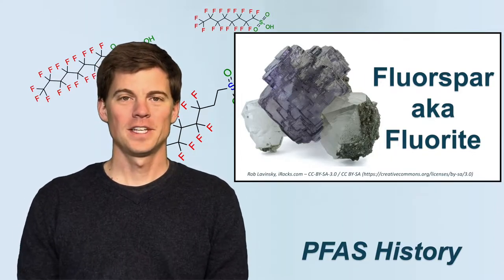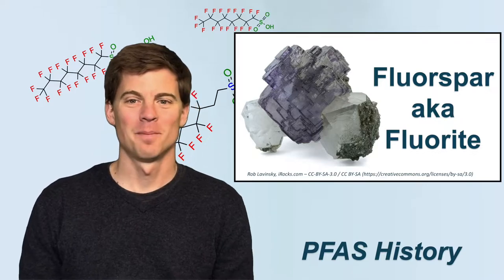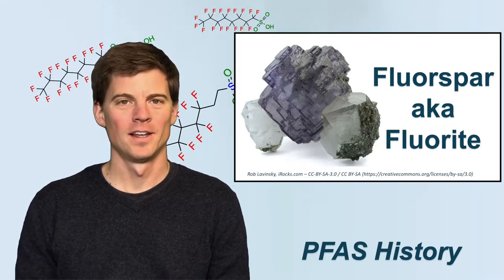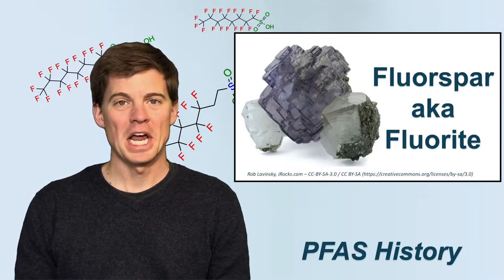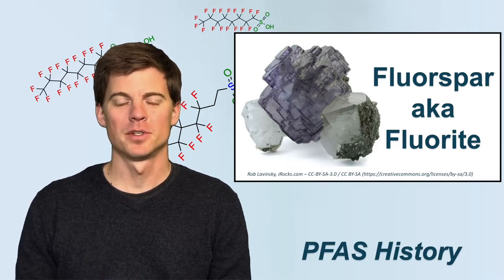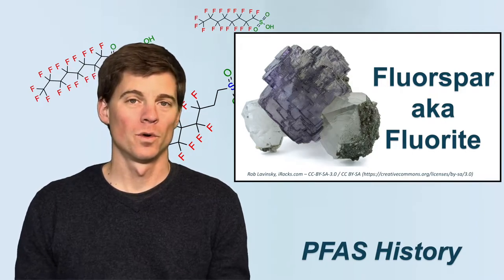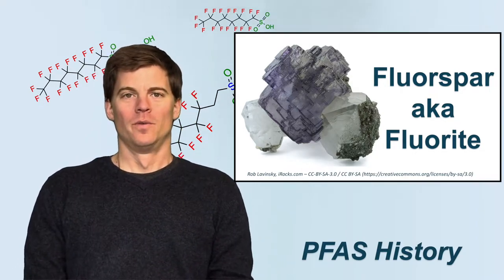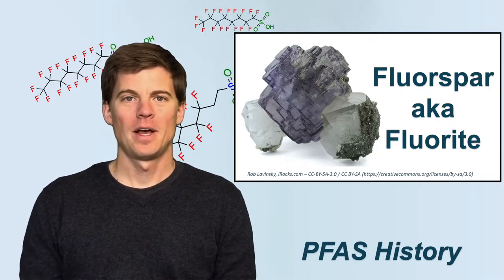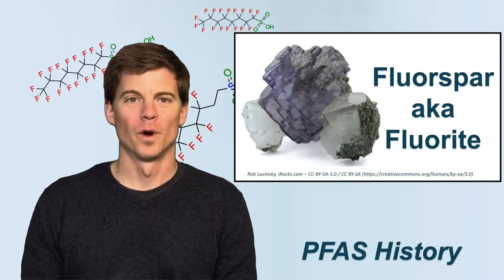The first thing to look at is a rock — actually a mineral called fluorite. The commercial name is fluorspar. This can contain up to 98–99% calcium fluoride, and this is the world's biggest source of fluoride. So when you look at any fluorinated compound, this is where it initially comes from: fluorite.